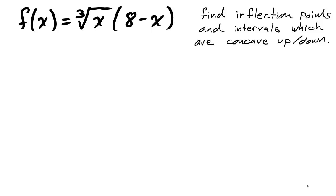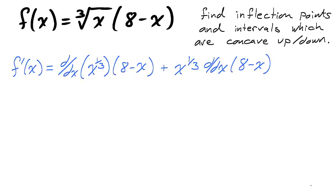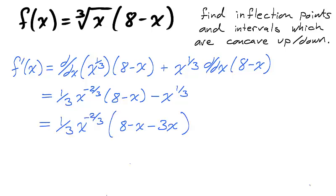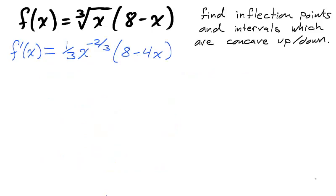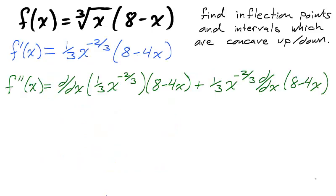Let's take the example of the function, the cubed root of x times (8 − x). We'll find the inflection points and intervals which are concave up or concave down. Taking the first derivative using the product rule, we simplify by factoring. Notice that each term in the sum has a part x — we factor the lowest exponent and clear the denominator by factoring the fraction one-third. We now have a nice simplified first derivative, but we need the second derivative to test for concavity.